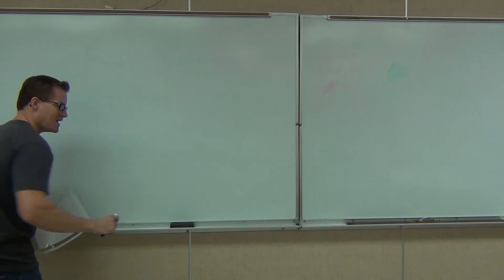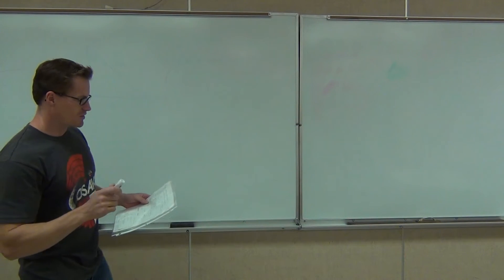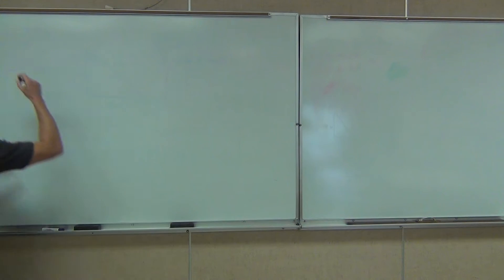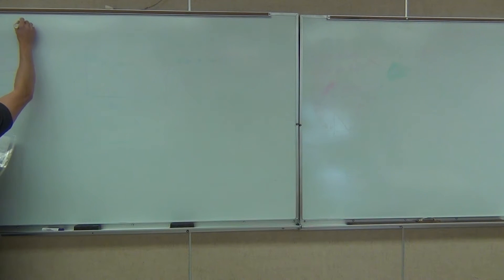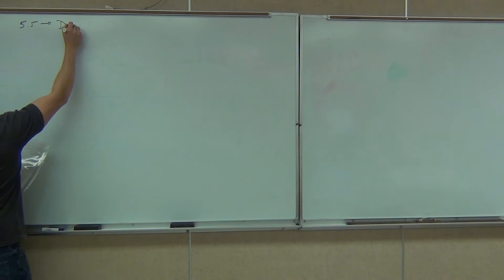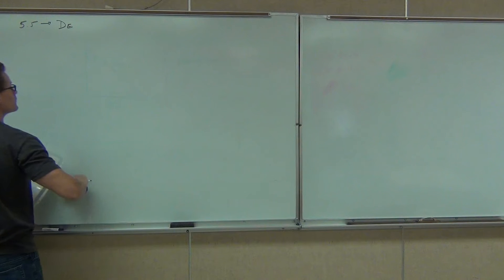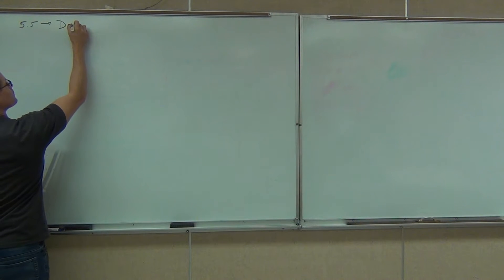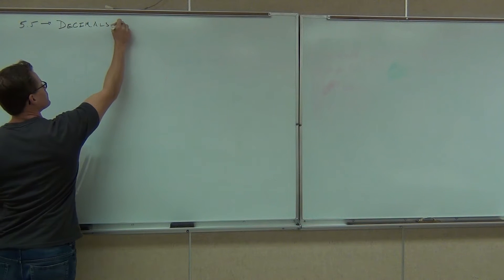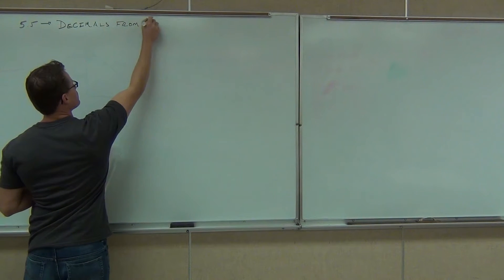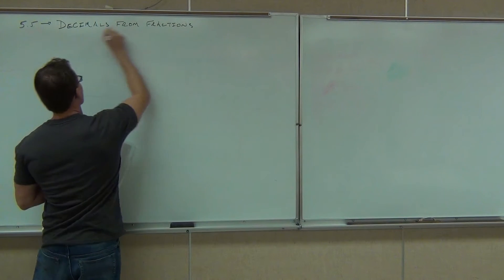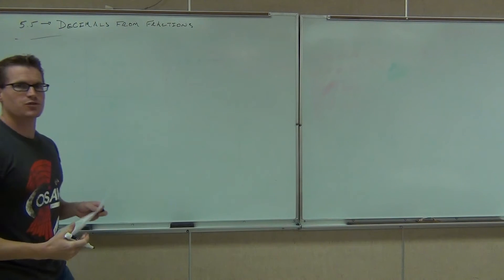We're going to talk about section 5.5. What we're going to do is change fractions into decimals, and then we're going to support those operations. So we're going to talk about how to get some decimals from some fractions.